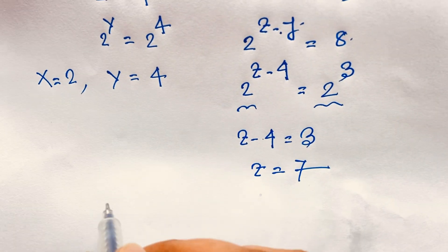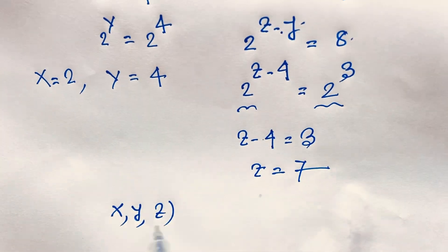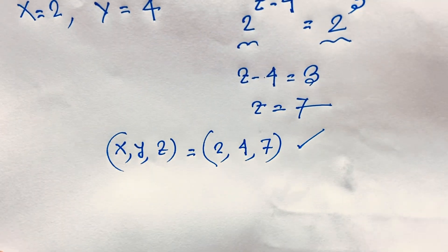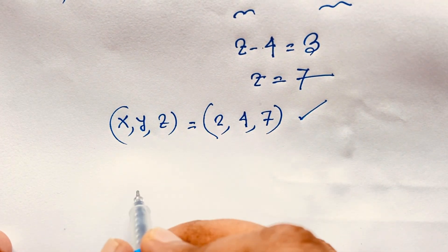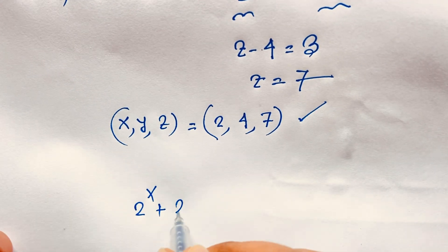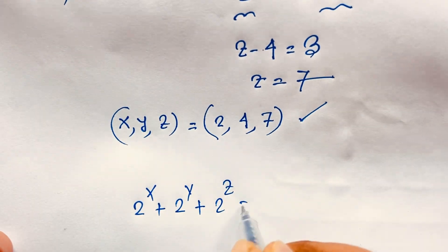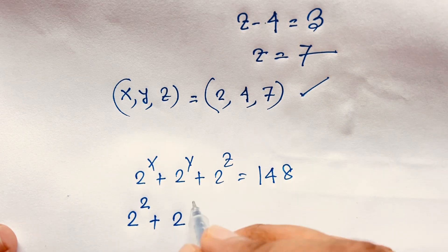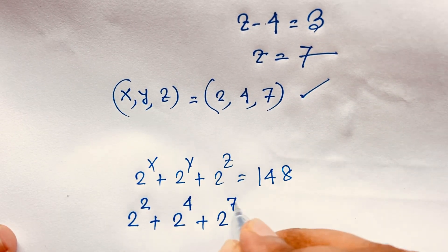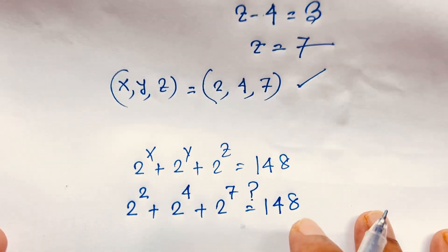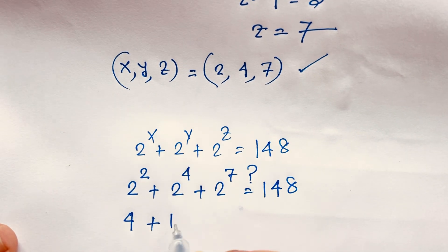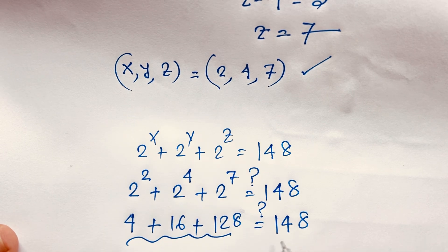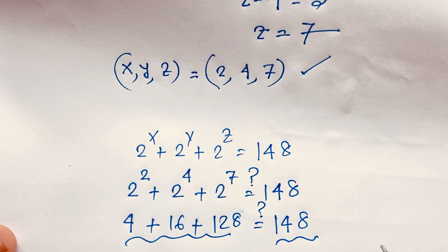Our final answer is x equals 2, y equals 4, z equals 7. Let's verify: 2 to the power 2 plus 2 to the power 4 plus 2 to the power 7 equals 4 plus 16 plus 128 equals 148. Left-hand side equals right-hand side — both sides are equal, so our answer is confirmed.